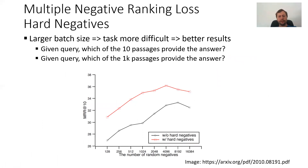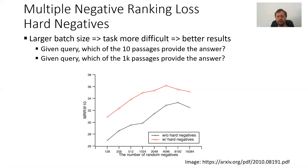It's quite easy to improve quality with this training objective — simply train with larger batch sizes, because this makes the task more difficult and produces better results. For example, with 10 passages it's easy to identify the correct answer, but with 1000 or 10,000 passages the task is much harder. As we can see from experiments on MS MARCO, with increasing batch size the performance significantly improves.